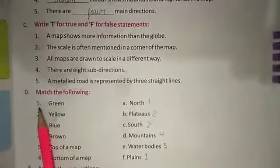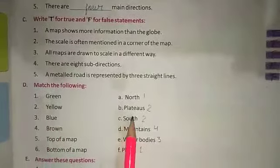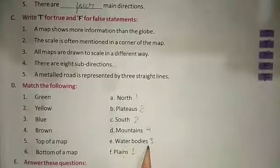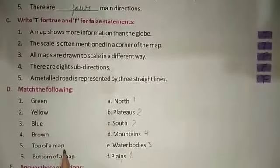Now D. Match the following. 1. Green, Plains, Yellow, Plateaus, Blue, Water Bodies, Brown, Mountains, Top of map. North. And bottom of a map, South.